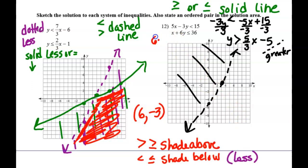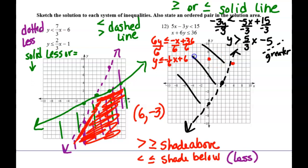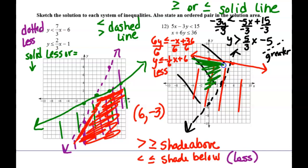The next inequality: 6y is less than or equal to negative x plus 36 after subtracting over. Do we have to flip the sign? No, because we're dividing by a positive. So we get y is less than or equal to negative one-sixth x plus 6. That one starts up at 6, goes down 1 and over 6. It is a solid line, and it's a less than, so shade below. The double-shaded area is below this one and above the previous one.